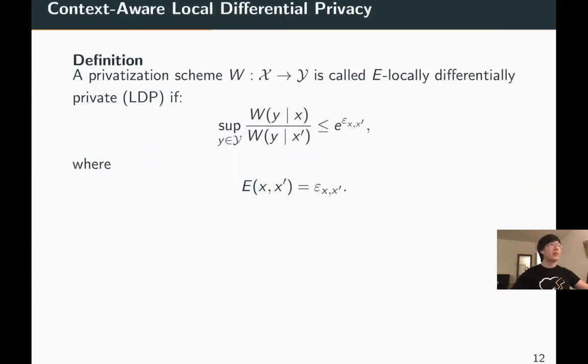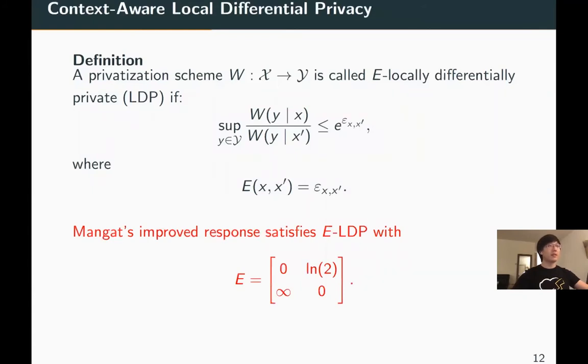In this paper, we propose context-aware local differential privacy. Given the matrix E, which defines the privacy levels between each pair of input elements, the notion requires the following. For any y in the output alphabet, the ratio between Pr(Y = y | X = x) and Pr(Y = y | X = x') is bounded by e to the epsilon_{x,x'}. If epsilon_{x,x'} equals epsilon for all x and x', this recovers classic LDP. We can see Manga's improved response satisfies ELDP with the following privacy matrix. This framework offers more flexibility for privacy experts to use domain knowledge to design privacy notions based on specific applications.